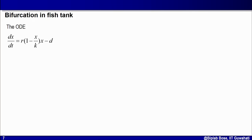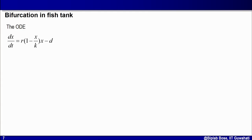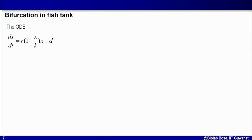Let us look at another example: the fish tank problem, where we are growing fish in a tank and at equal intervals take out some fish to sell. As the tank has limited space and resources, I use a logistic growth model with removal as a negative term. Here x is the number of fish at any time, and dx/dt = r(1 − x/k)x − d, where k is the carrying capacity, r is the growth rate constant, and d is the constant removal rate. I want to determine whether this system has bifurcation with respect to parameter d.